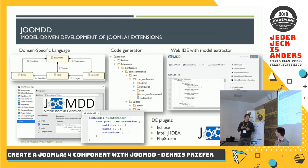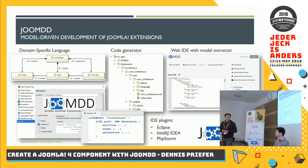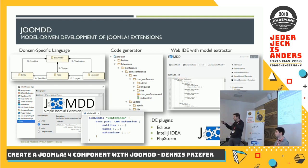That was the birth of JoomDD, which we developed in the last years together with students, but mainly with three people. JoomDD consists of a domain-specific language which is really straightforward. You have a few model or language parts you have to create during your model development — a model which you use as input for code generation, not a Joomla model, not a model in the component.